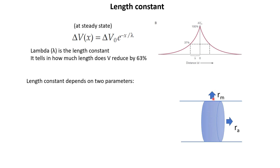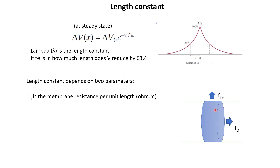We define two parameters: Rm and Ra. Rm is the membrane resistance per unit length and Ra is the axial resistance per unit length. Both resistance values will depend on the length of the neurite considered. If we increase the length, we increase the surface area, so the resistance decreases with length. The resistance of a length L will be Rm divided by L, if Rm is the resistance per unit length. So Rm must have units of ohm times meter, and dividing by L gives a final resistance in ohms.